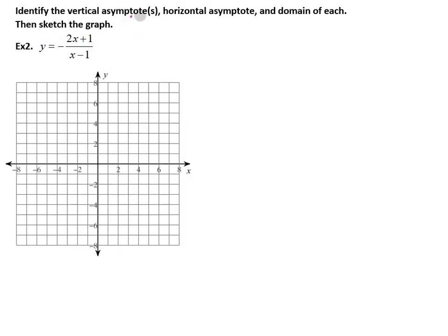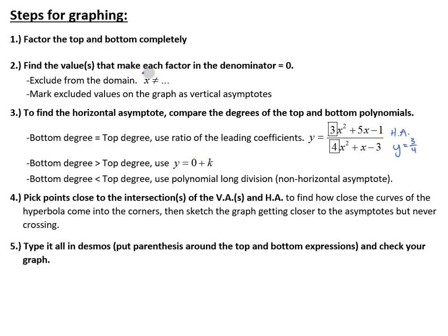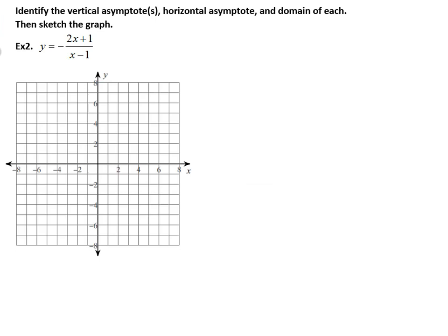Let's try another example. Identify the vertical asymptote or asymptotes, horizontal asymptote, and domain, then sketch the graph. There's nothing to factor from the top and bottom. For the vertical asymptote, we take x minus 1 equals zero — adding 1 to each side we get x equals 1. That is where we have our vertical asymptote at x equals positive 1.